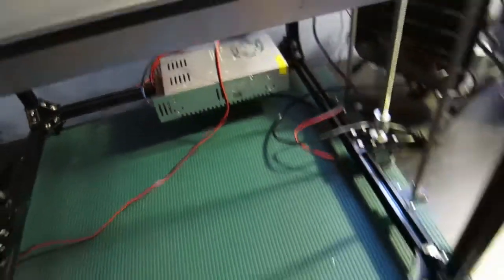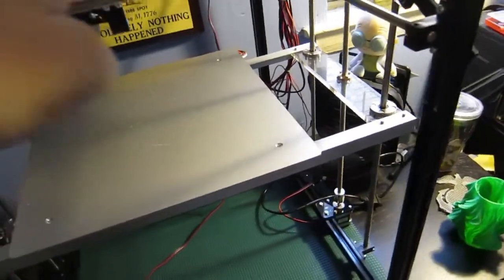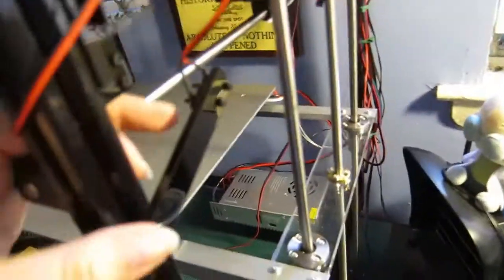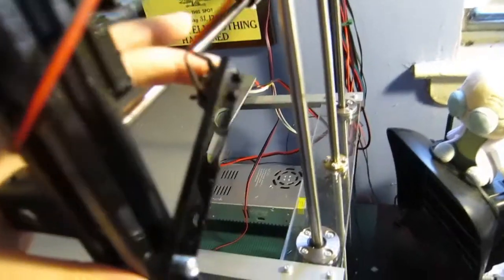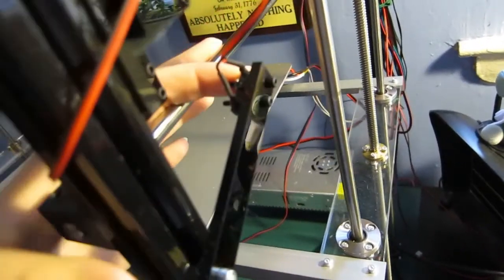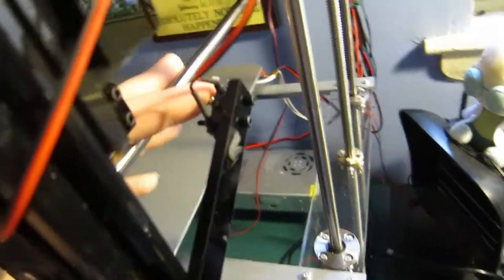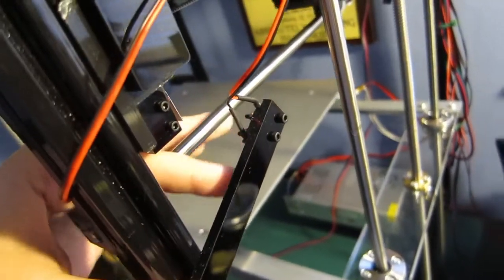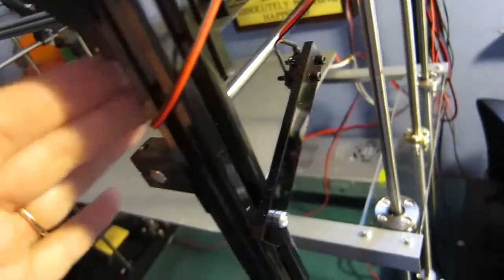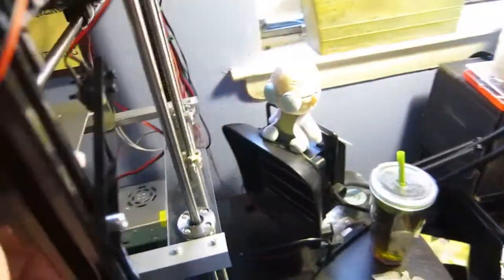The power supply is right back here. There's the end stops—this would be the manual Z end stop. I just have it mounted even though I'm not using it, it's not plugged in, but just in case I do want to use it. Over here is the Y end stop, and those are pretty adjustable too.